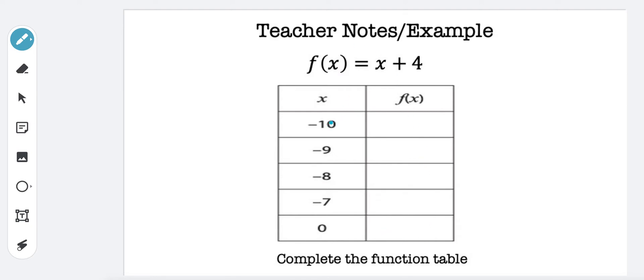So what we know is if we plug in negative 10 and put this x, negative 10 plus 4 would be negative 6. And then if I plug in a negative 9 in for x, negative 9 plus 4 would be negative 5.